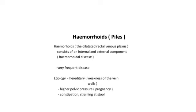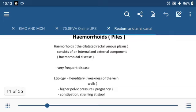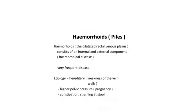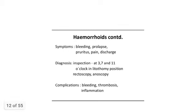Hemorrhoids are a very common condition of the anus and rectum, defined as dilated rectal venous plexus consisting of internal and external components. Etiology includes hereditary weakness of vein walls, higher pelvic pressure, pregnancy, constipation, and straining at defecation. Hemorrhoid symptoms commonly include bleeding, prolapse, pruritus, pain, and discharge.